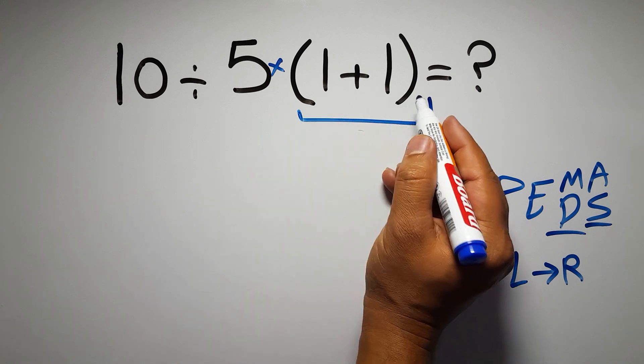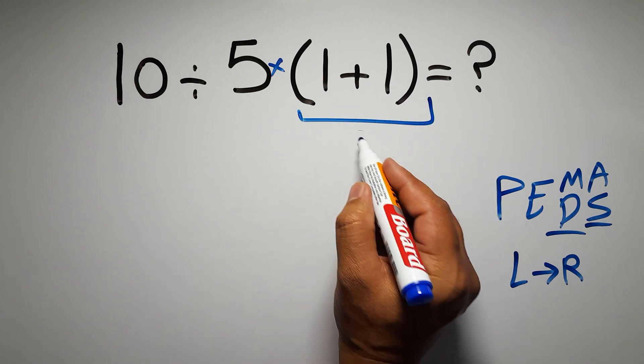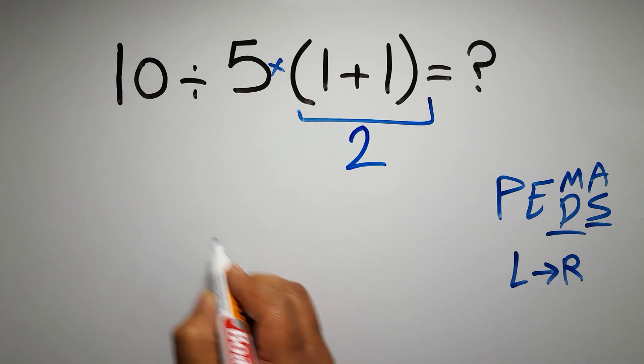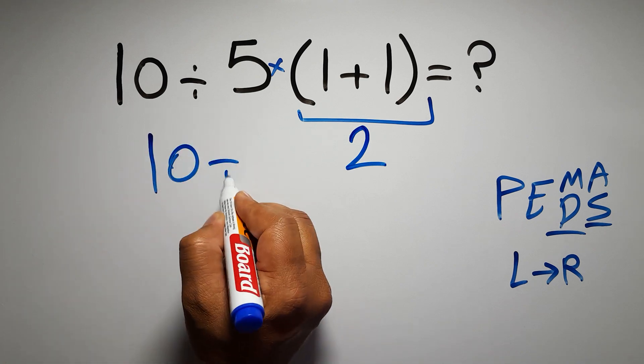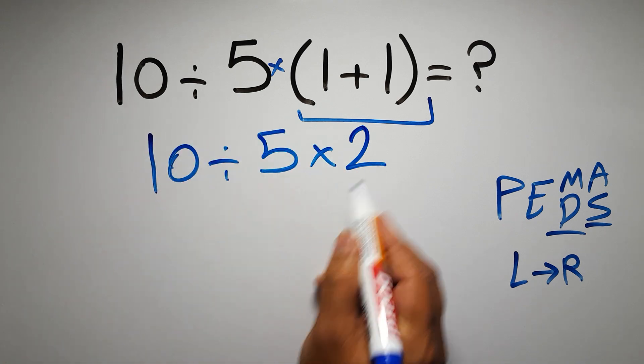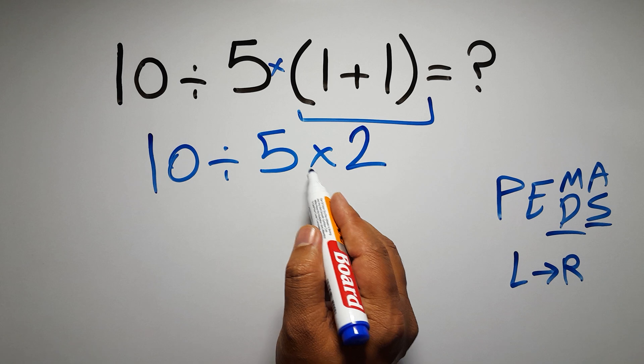So first this parentheses: inside this parentheses we have 1 plus 1 which equals 2, so 10 divided by 5 times 2. Now we have one division and one multiplication.